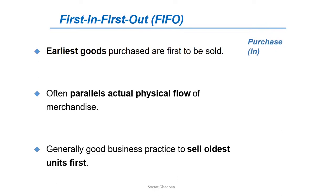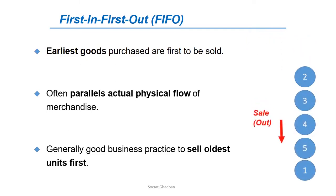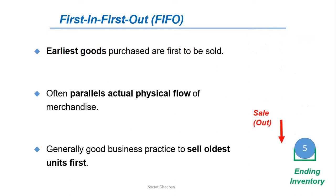As you can see here, when we make the purchase of the first item, the second item, and the third item, this is the order in which items enter our inventory. Since it's first in, first out, the first items to enter are the first to be sold. So at ending inventory, we will have the last item, which was the last item to be purchased.